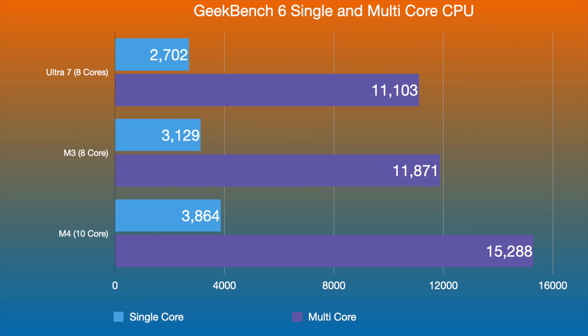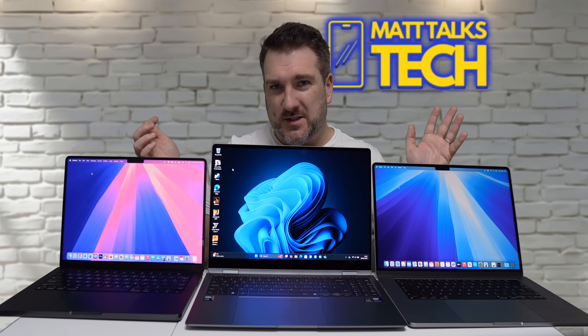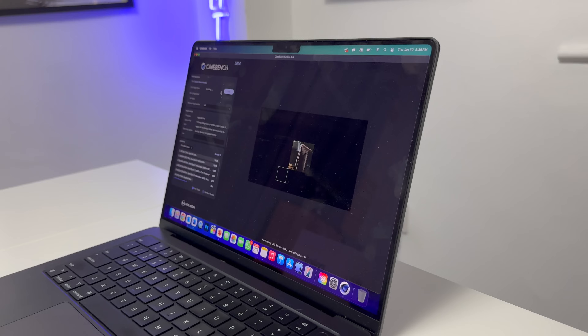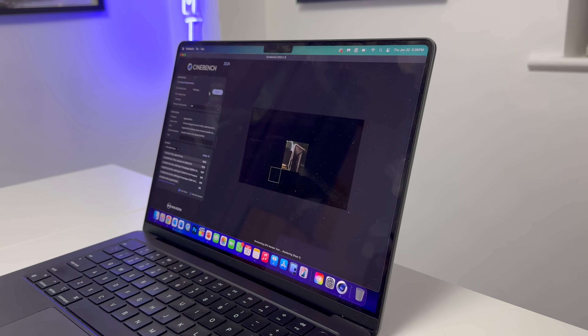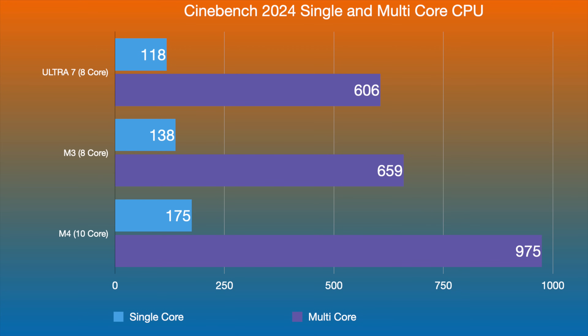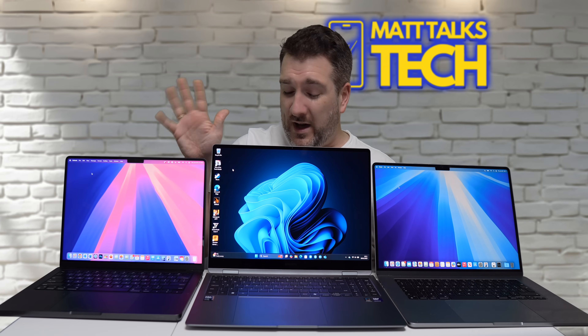Since Geekbench doesn't always give the full picture, I also ran Cinebench 2024. The single-core scores were 118, 138, and 175 for the Ultra 7, M3, and M4 respectively — again the Ultra 7 is behind. In multi-core, the Ultra 7 and M3 are close, but the M3 just pulls ahead, and the M4 with its 10-core setup scores 975, really pulling ahead significantly.